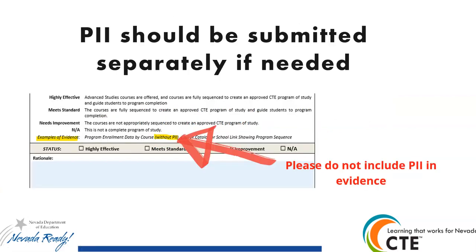PII should not be on any information submitted to us through the drive you're going to upload. We don't really need it for any of these pieces of evidence. PII includes things like student names and student ID numbers — just black them out. You can show me your IC class list and black out those columns. I can still see how many students are there, how many male, how many female, the total number, and the name of the class. If you feel you have to put something with PII in it, it has to be uploaded to Bighorn and you'll need to notify me it's there. My preference is you just don't — just black it out and don't use it at all.